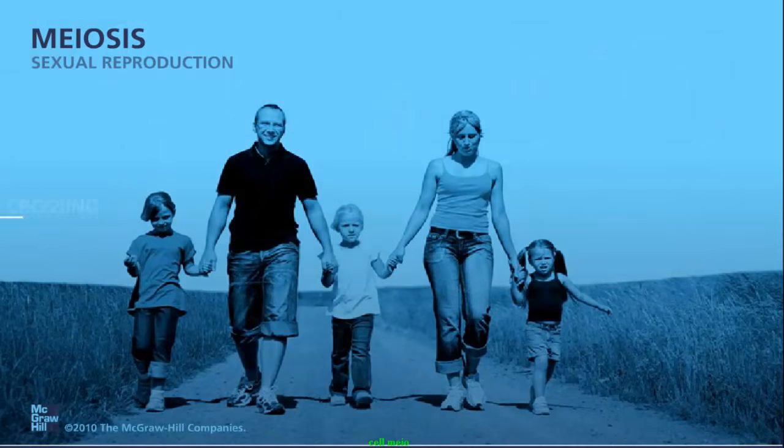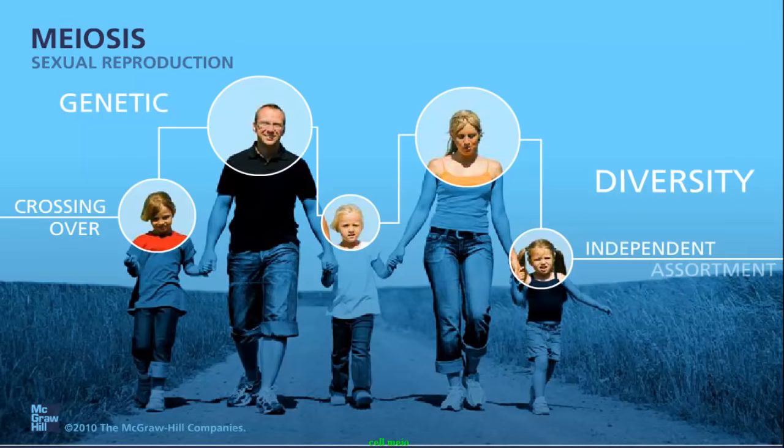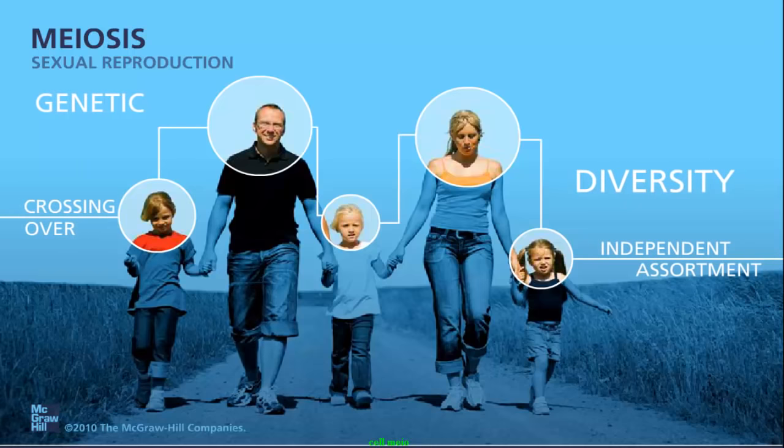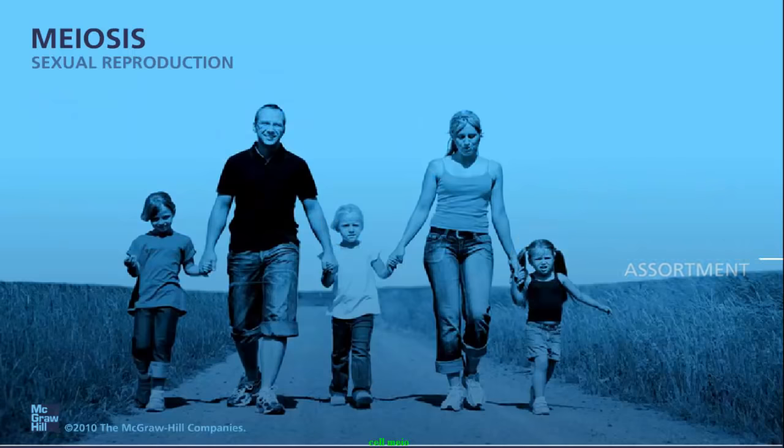The combination of independent assortment, crossing over, and the random pairing of gametes during sexual reproduction increases genetic diversity and explains why a child will not look exactly like his or her parents or siblings.